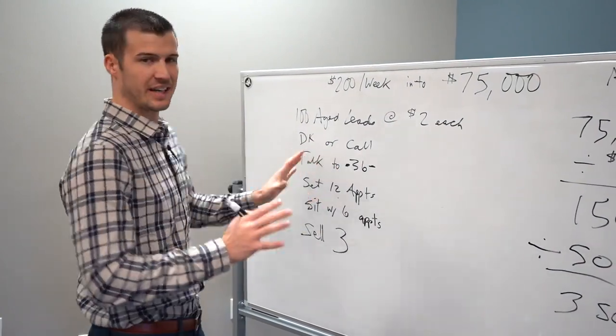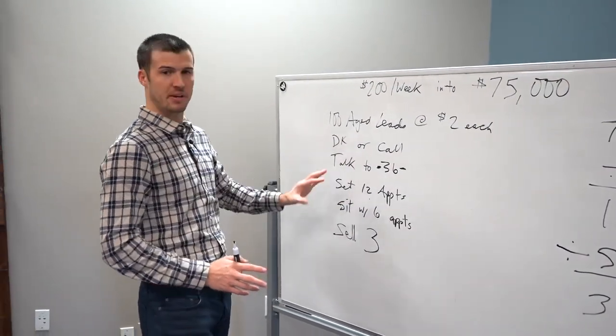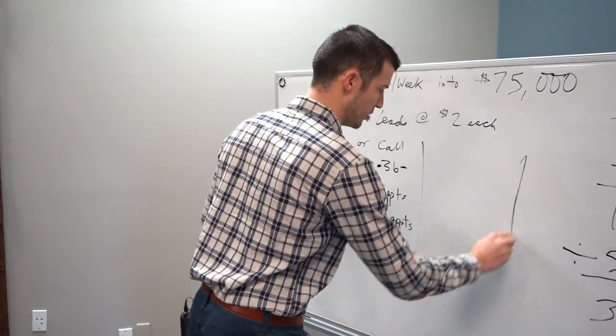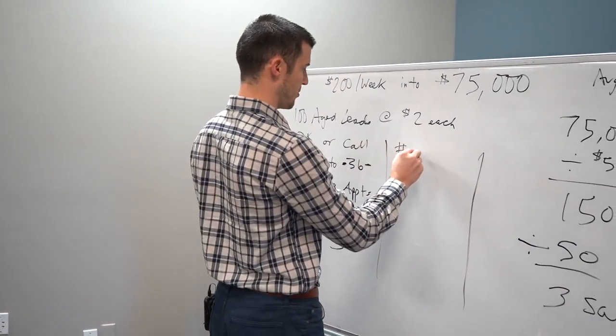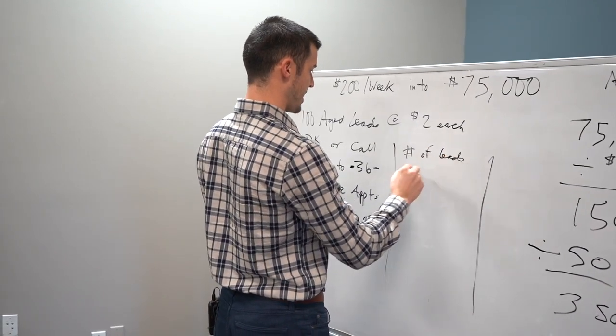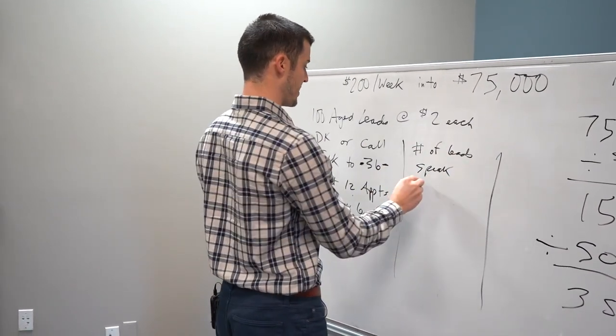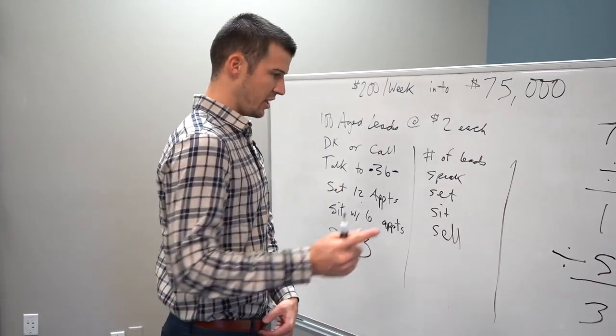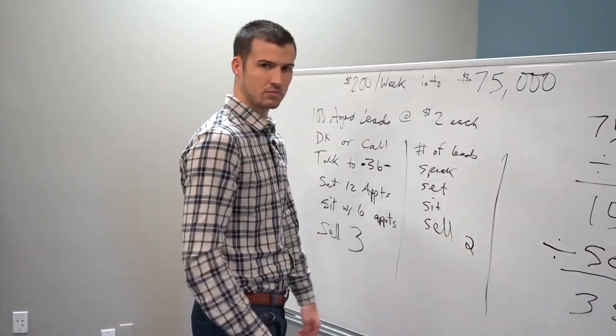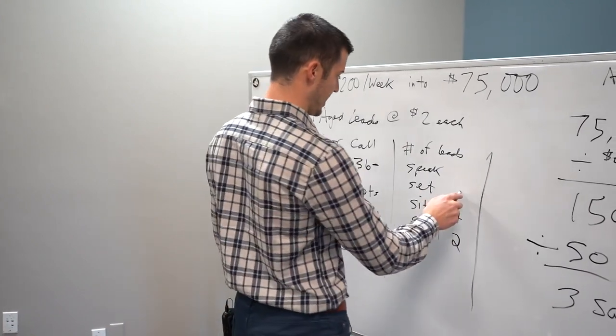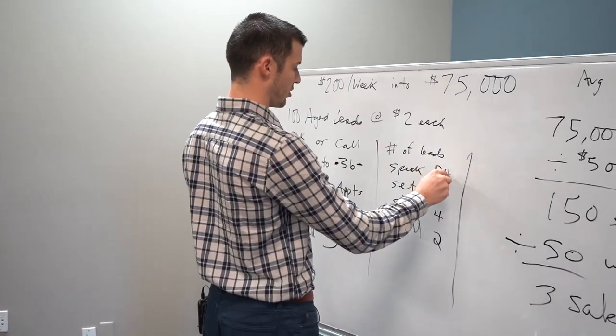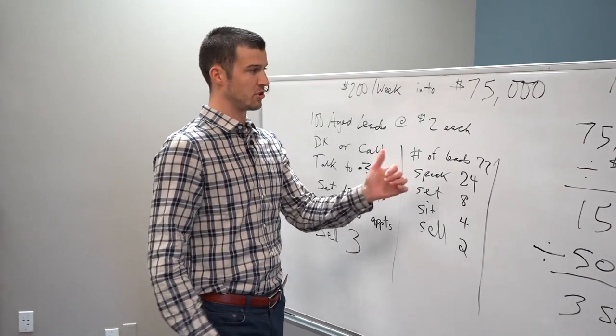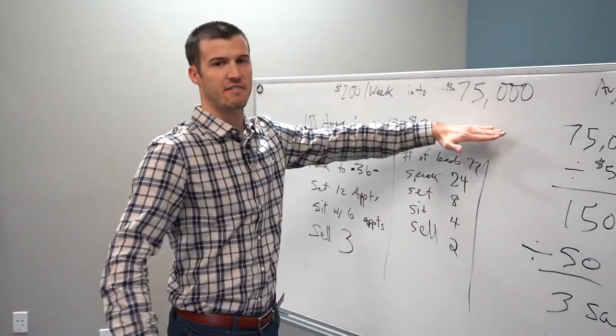Maybe these numbers are not exact for you. I know these are about what has happened to me in the past when I've worked aged leads. But even if those aren't your numbers, then create your own numbers. When you get so many leads, and then you speak to so many people, and then you set with so many people, sit with so many people, and sell so many people, what does that look like for you? Let's just say right now you're selling two because you're sitting with four and setting eight and speaking with 24 and buying 72 aged leads. Then you just need a few more. Because numbers are like, this is how you can invest $200 a week and earn 75K.